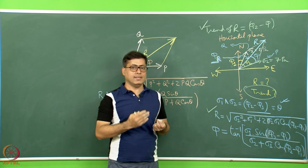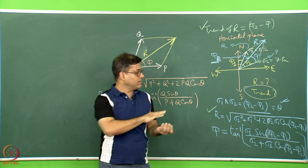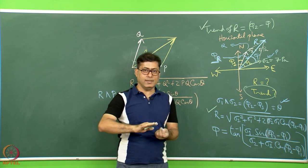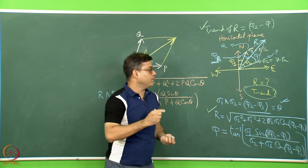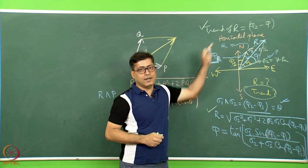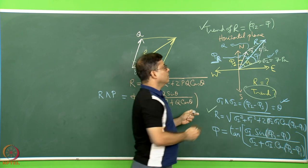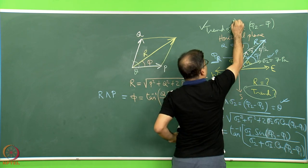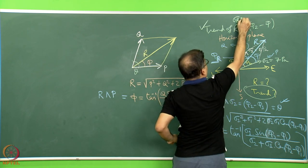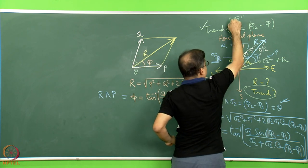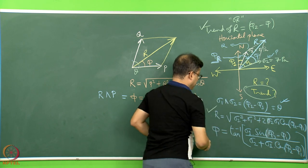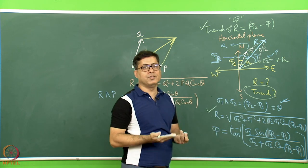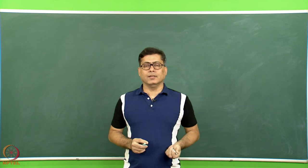What is the plunge? Since all work is on a horizontal plane, the plunge of the resultant stress sigma R is 0 degrees — it is horizontal.